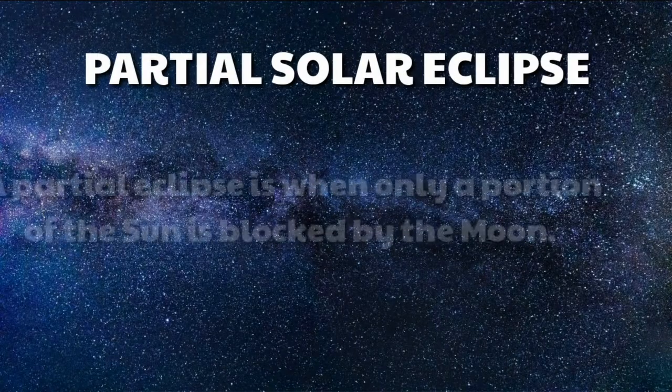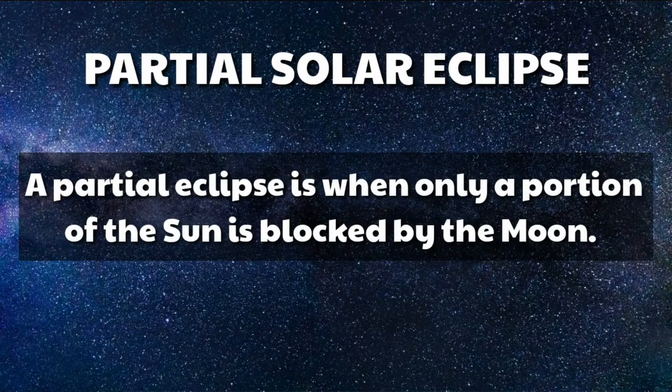Partial solar eclipse. A partial eclipse is when only a portion of the Sun is blocked by the moon.